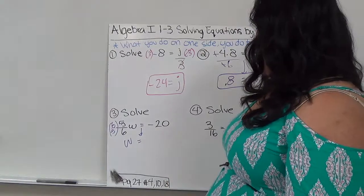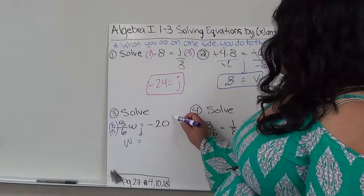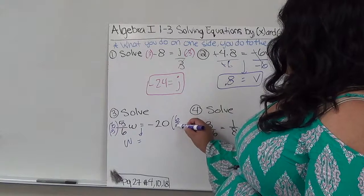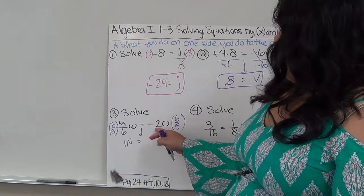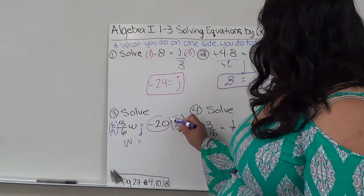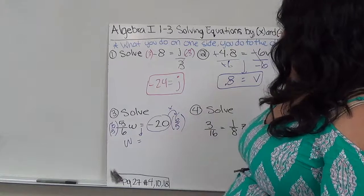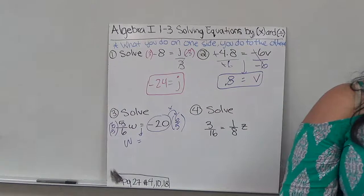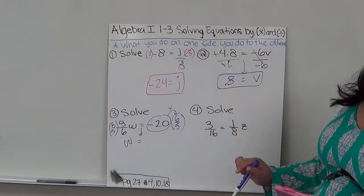I bring down that equal sign. Now, what I do to one side, I have to do to the other. So that means I also have to multiply this by 6 over 5. And I multiply a whole number by taking the whole number, so negative 20, and I multiply it by 6, and then I divide it by 5. So I'm going to do negative 20 times 6, which gives me negative 120.